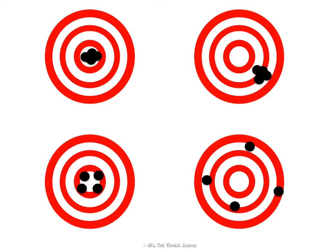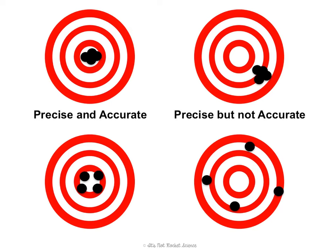Here's a visual to show the difference between precision and accuracy. This is the bullseye, and when you're throwing darts or shooting a bow and arrow, the correct place to hit would be the center. This first person is both precise and accurate — they're consistent in their dart throwing, and they're hitting the bullseye every time. This second person is precise but not accurate. They're very consistent, but they're not correct; they're not hitting the bullseye.